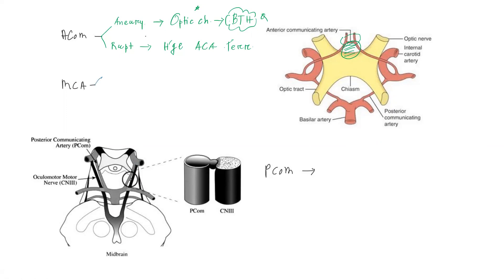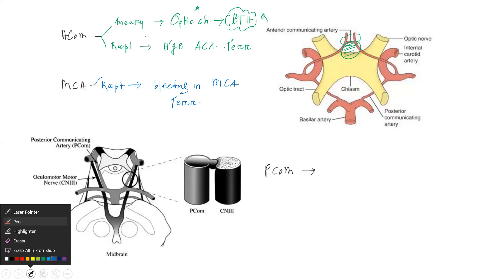If there is an MCA aneurysm and it ruptures, it will cause bleeding in the MCA territory — the middle cerebral artery territory. Infarction or hemorrhage in the middle cerebral artery territory can cause contralateral hemiparesis with sensory loss.